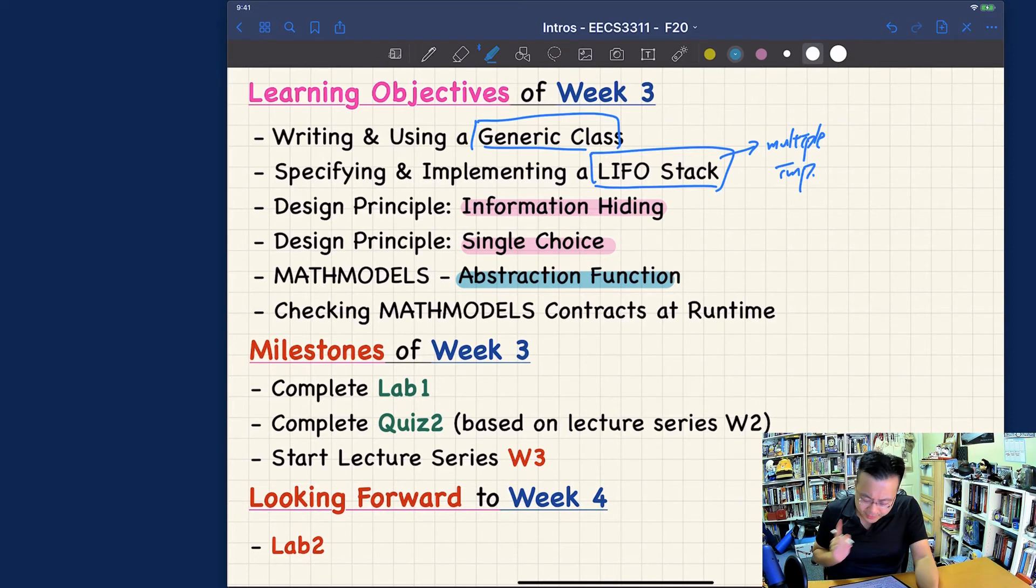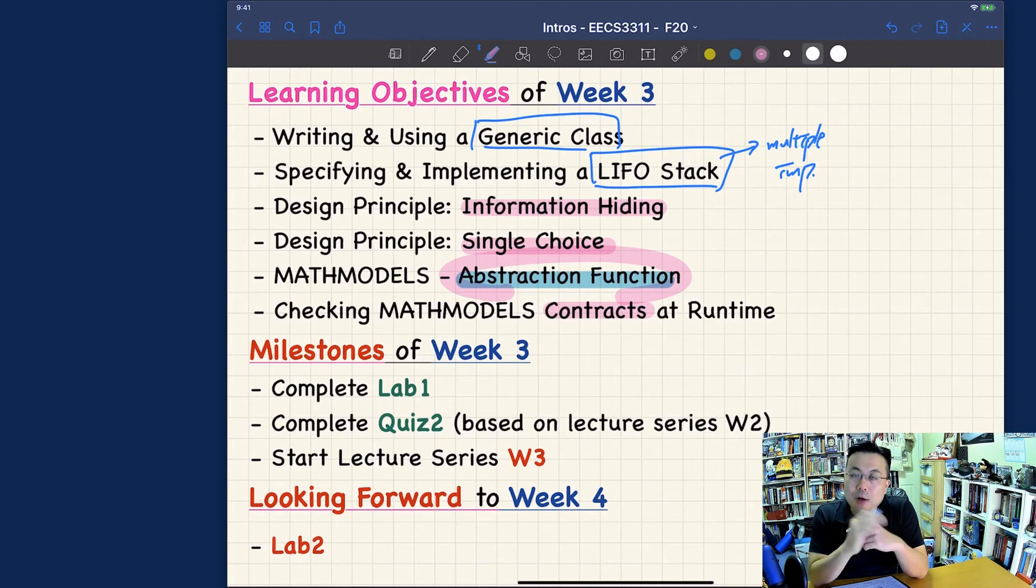And once you know about how to define abstraction function, you have to write contracts in terms of the math models. So that's something you will also have to learn. And also how to check that contract at the runtime. You have to understand how things are done at runtime so that you can really specify them properly.